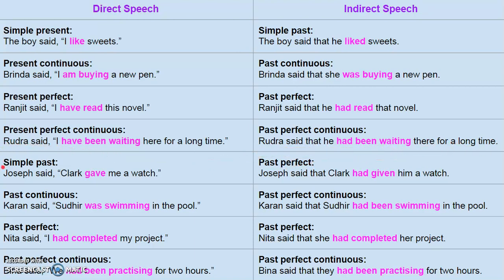Similarly, simple past will be changed into past perfect. For example, 'Joseph said Clark gave me a watch.' 'Gave' is in simple past form, so this will change into the past perfect form 'had given.' The sentence becomes: 'Joseph said that Clark had given him a watch.'